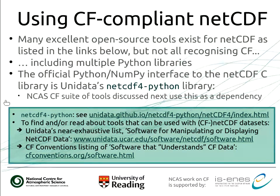For example, standard names — names you can give to data arrays that are definitive in the sense that there wouldn't be two different names for the same quantity like air temperature. That's a simple example, but in earth science there are very subtle and complicated quantities to describe. So only a subset of the various tools will actually work with CF in the sense of understanding it.